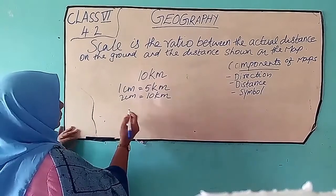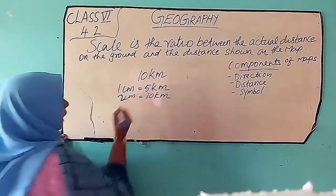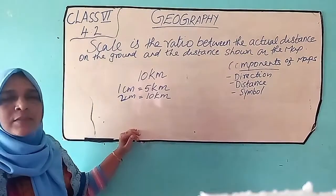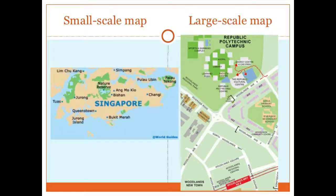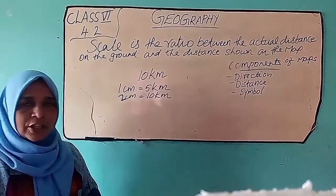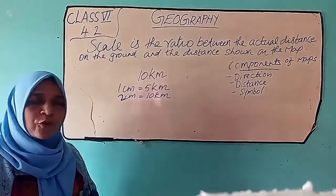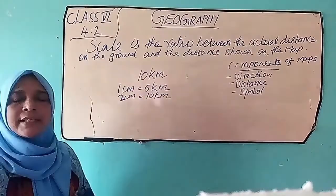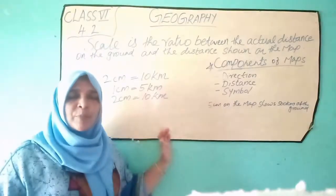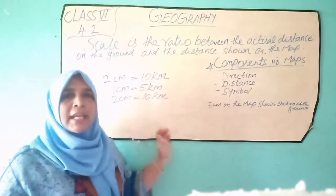Then the other points: large scale map and small scale map. 1 cm is equal to 10 km. The scale is very important and very helpful to calculate the distance between two places.